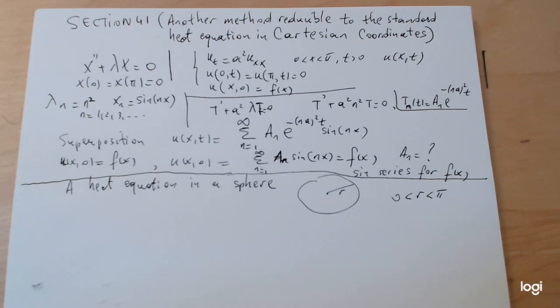To keep the problem easier, let's assume that the temperature flows across the radius in a radial fashion, but it doesn't depend otherwise on the location, excuse me, on the angle coordinates.